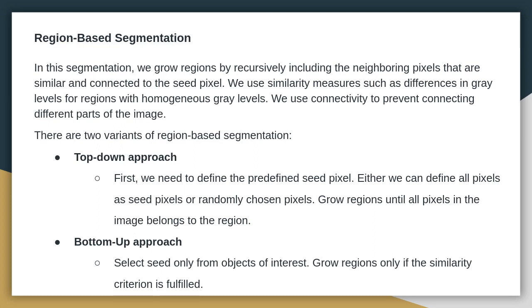In the top-down approach, we need to define predefined seed pixels. We can define all pixels as seed pixels or randomly chosen pixels. We then grow the region until all pixels in the image belong to a region.